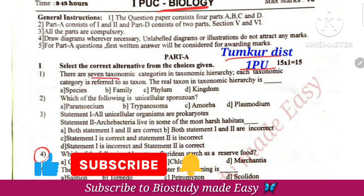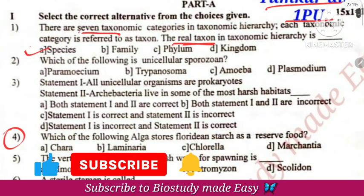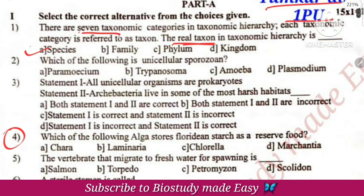In 7 taxonomic categories, there is a real taxon — species. So, there is a real existence. There is a species that exists in this category.